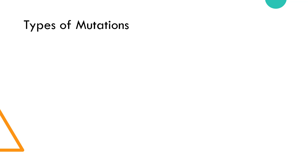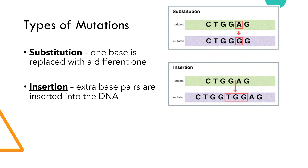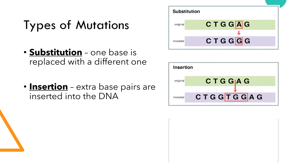To help you better understand what a mutation is, let's briefly go over three main types of mutations. One is a substitution, where one base is replaced with a different one — a substitute is used in its place. Another is an insertion, where extra base pairs are inserted into the DNA. Another type is a deletion, where a section of DNA is lost or deleted. All of these are mutations because a section of DNA is being changed somehow, so it isn't the same as it was before.